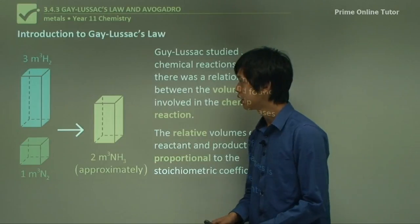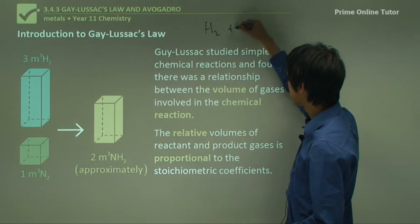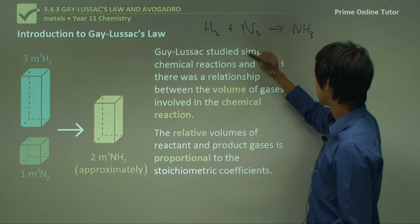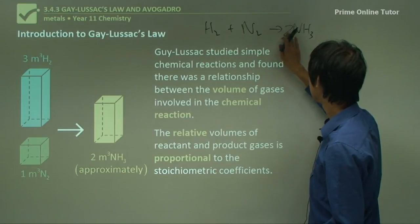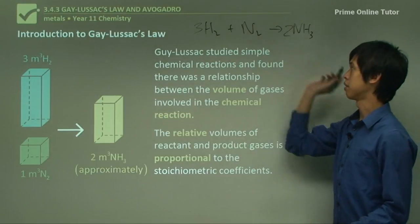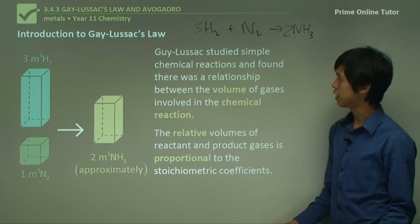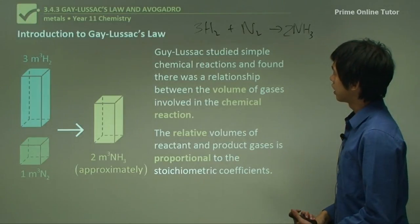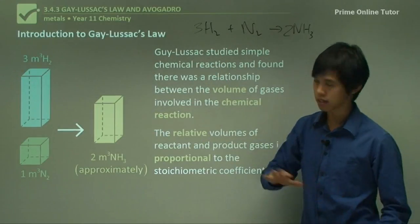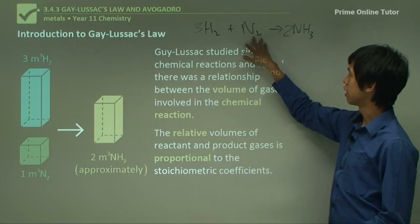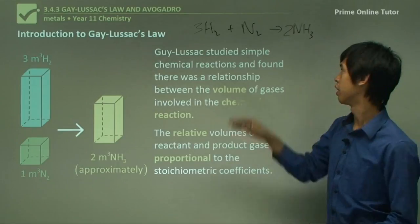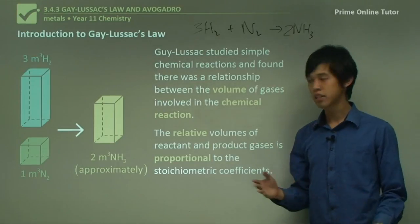Basically, the amount of volume that you need of a particular gas is proportional to the numbers in the chemical equation. So let's look at this one here. You've got H2 plus N2 and that goes to form NH3. And in order to balance this, we need 2 here and 3 here and 1 there. So that's our chemical equation. And what Gay-Lussac found was that if you had 3 volumes, let's say 3 liters, of hydrogen, 1 liter of nitrogen,